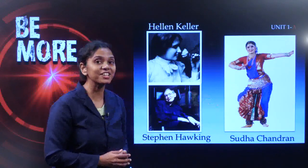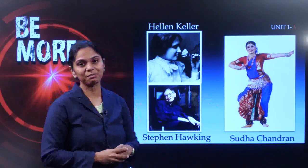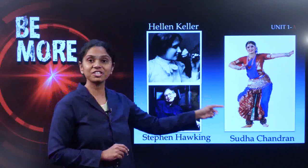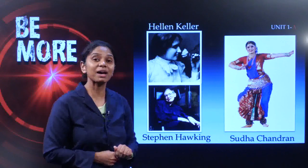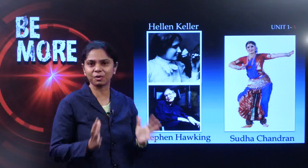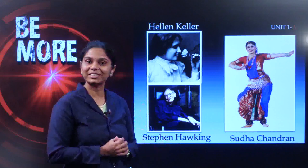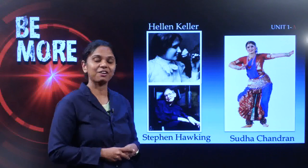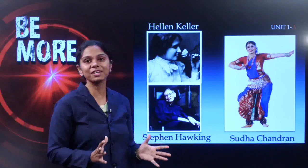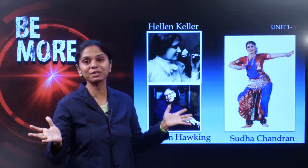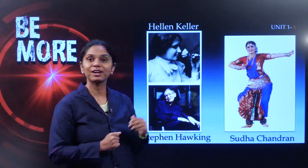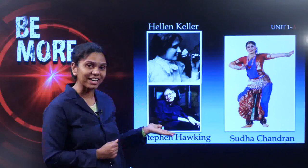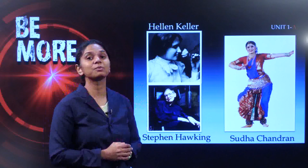First, meet our very own Sudha Chandran. She was a budding dancer, but life threw a lemon at her — she lost her right leg in an accident. Imagine a dancer's dreams crushed when you lose an entire leg. But that did not stop her. She put on an artificial Jaipur leg and went ahead to become an accomplished Bharatanatyam dancer, giving innumerable shows. She is also a TV and theatre artist.